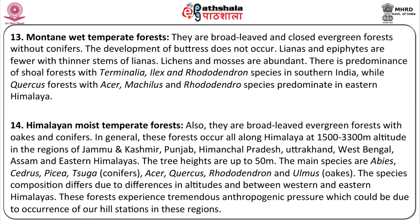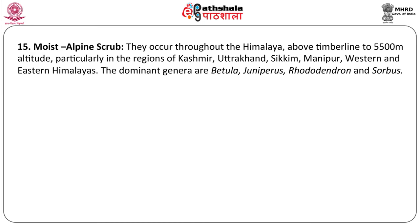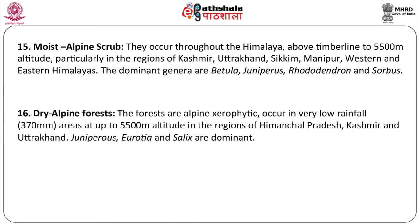Himalayan moist temperate forests are broadleaved evergreen forests with oak and conifers. In general, these forests occur all along the Himalayas at 1500 to 3300 meter altitude in the regions of Jammu Kashmir, Punjab, Himachal Pradesh, Uttarakhand, West Bengal, Assam and Eastern Himalayas. The height of trees is up to 50 meters. Moist alpine scrub occurs throughout the Himalayas above the timberline to 5500 meter altitude, particularly in the regions of Kashmir, Uttarakhand, Sikkim, Manipur, Western and Eastern Himalayas. Dry alpine forests are alpine xerophytic, occurring in very low rainfall areas of around 370 millimeters at up to 5500 meter altitude in the regions of Himachal Pradesh, Kashmir and Uttarakhand.